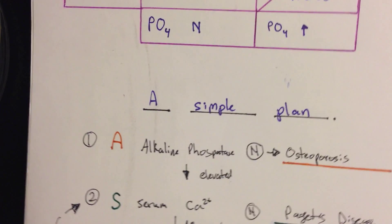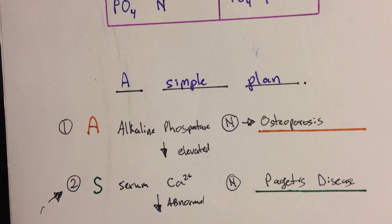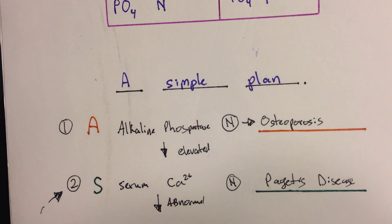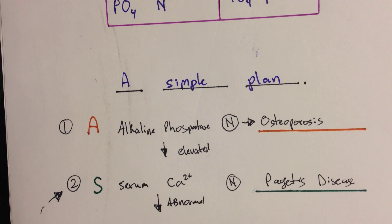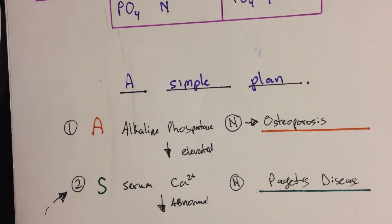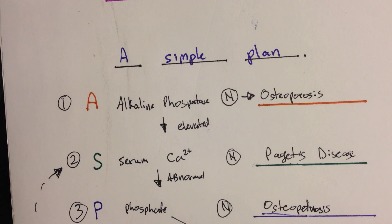Here's how the simple plan works. First, look at alkaline phosphatase. If it's normal and every other lab value is normal, you're probably looking at osteoporosis — check the history to confirm. If alkaline phosphatase is elevated but serum calcium is normal, you're probably looking at Paget's disease. That's how you distinguish osteoporosis from Paget's disease: look at alkaline phosphatase and the patient's history.